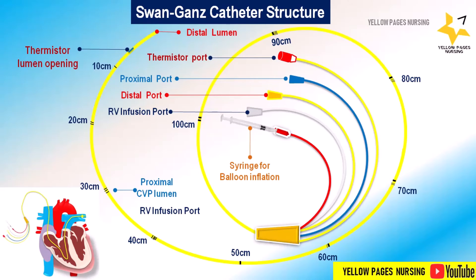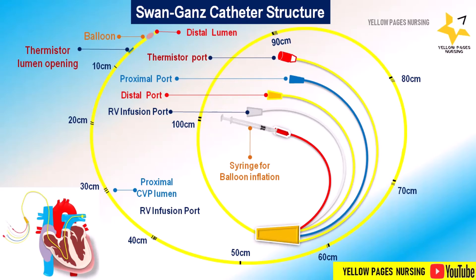Next is the balloon inflation valve with a syringe attached to it. The maximum volume is 1.5 cc of air inside the balloon. The balloon is located near the tip of the catheter and is inflated while the catheter is positioned in a branch of the pulmonary artery.